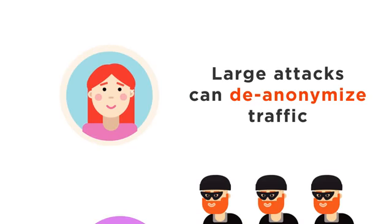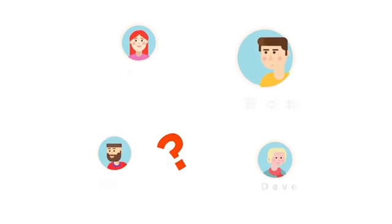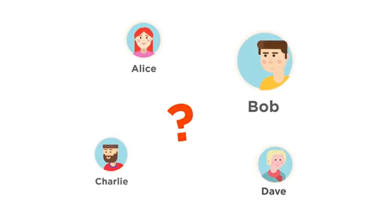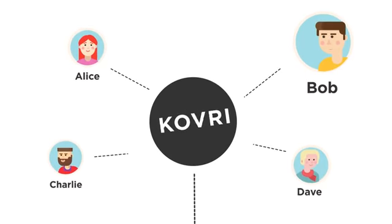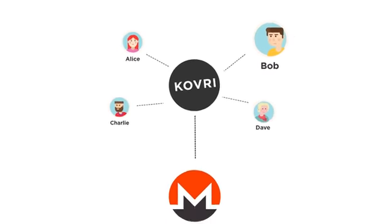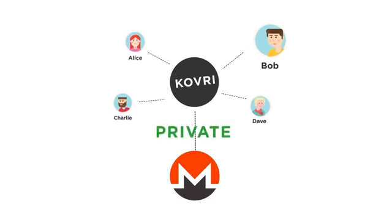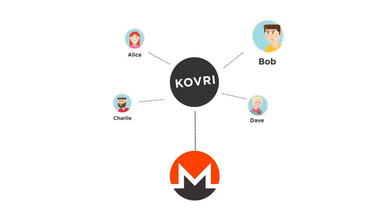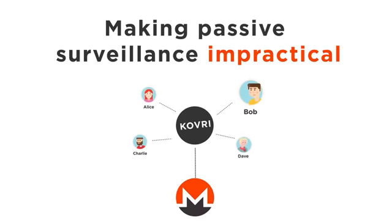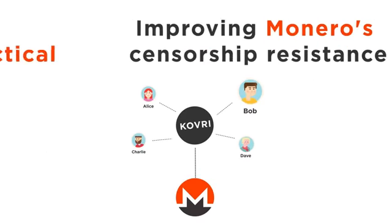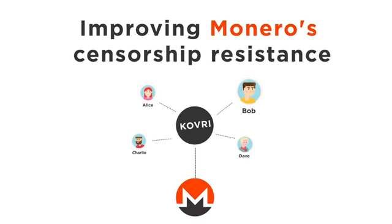So what can Alice, Bob, Charlie, and Dave do to mitigate these threats? They could use Kovri. If they exclusively use Kovri to connect to the Monero network, no one will know their IP address, making passive surveillance impractical, while substantially improving Monero's censorship resistance.